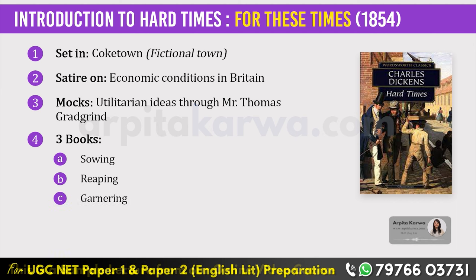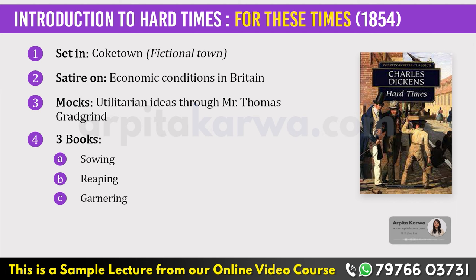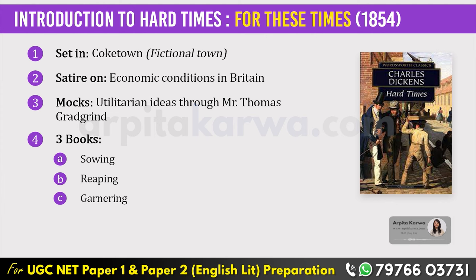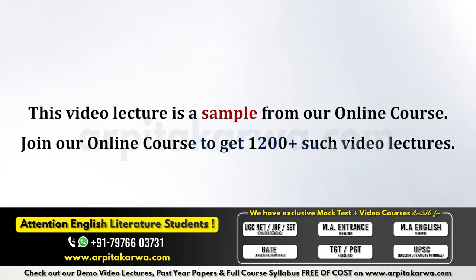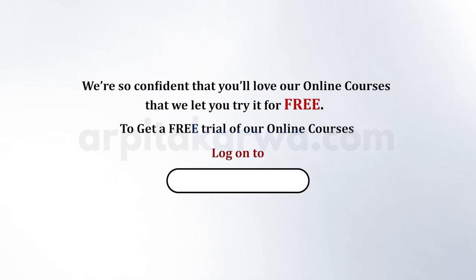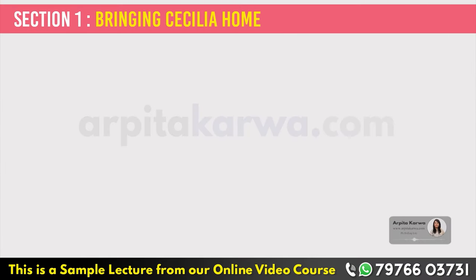Sowing means planting a seed. When you want to grow a full-fledged tree, the first step is planting the seed — what you sow is what you reap. So book two is Reaping: if you planted an apple tree, you get apples; if you planted a mango tree, you get mangoes. And the third book is Garnering, which means to obtain or collect something. So you sow the seed, you reap the harvest, and then you garner those fruits.